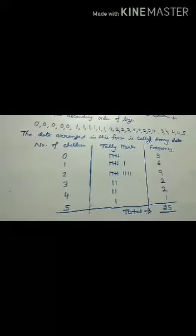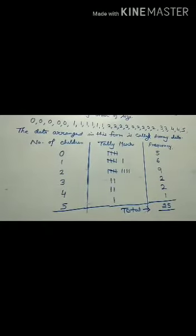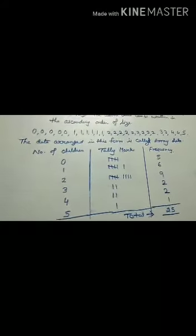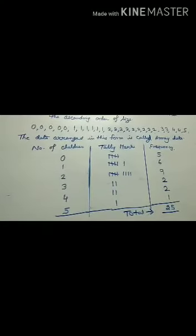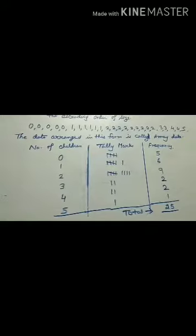To prepare this, write the variate in the extreme left column. Then we take each observation from the raw data, one at a time, and mark a stroke called tally marks in the next column, opposite the variate.